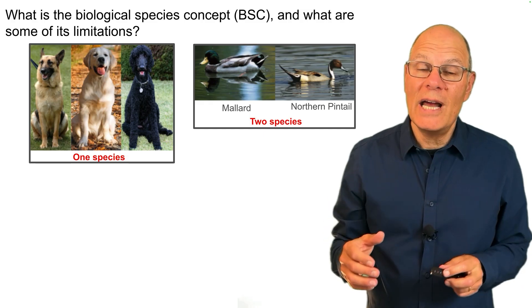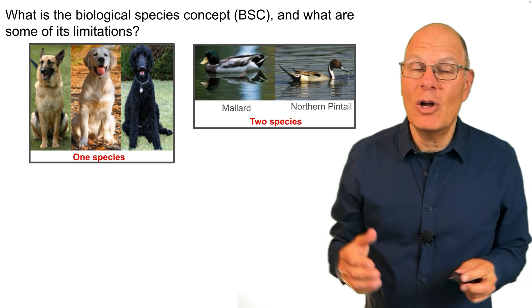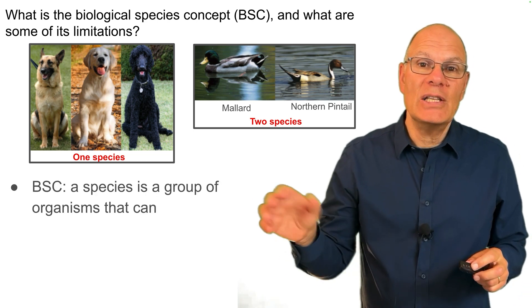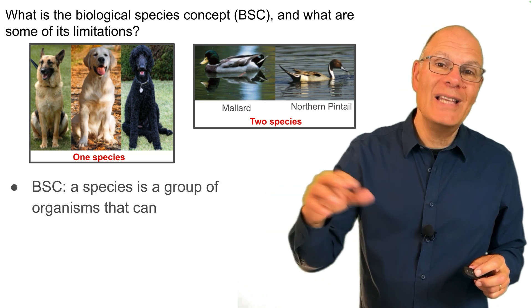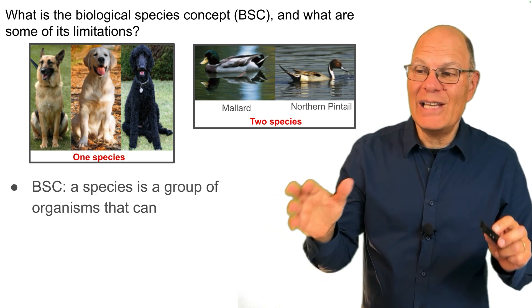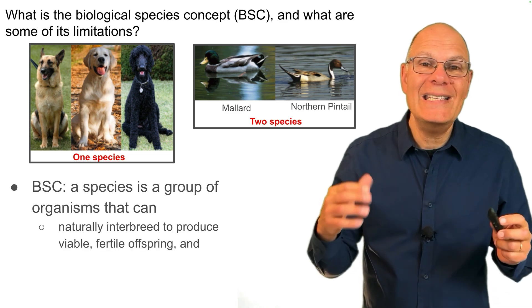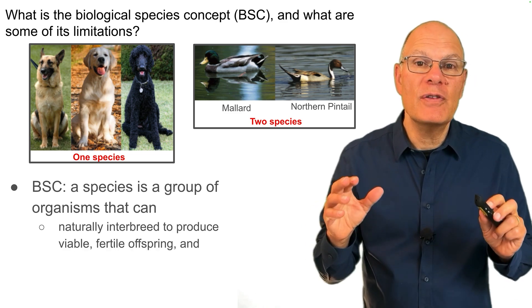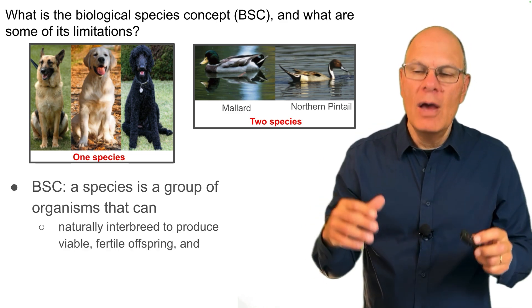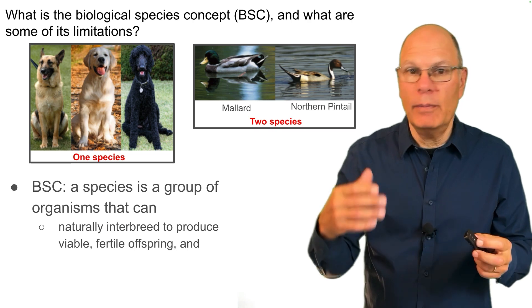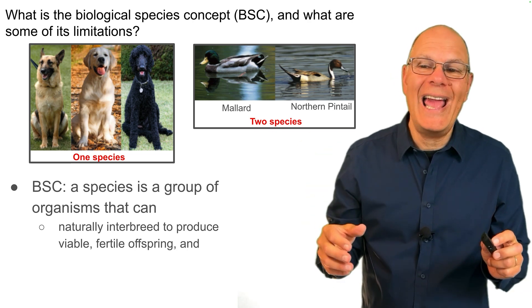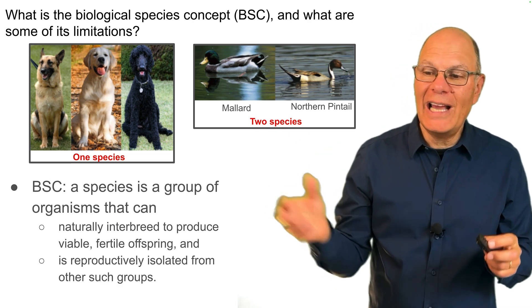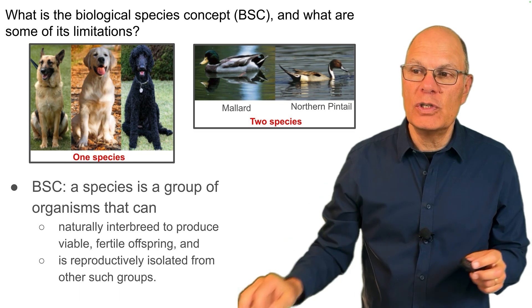What is the biological species concept and what are some of its limitations? The biological species concept defines a species as a group of organisms that can naturally interbreed to produce viable, meaning healthy, fertile, meaning able to reproduce, offspring, and which is reproductively isolated from other such groups.